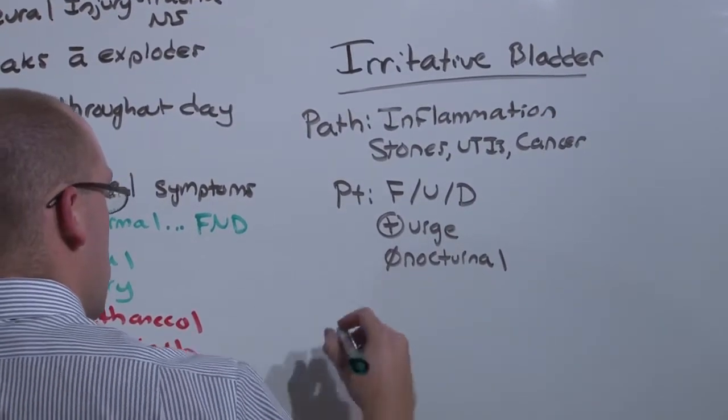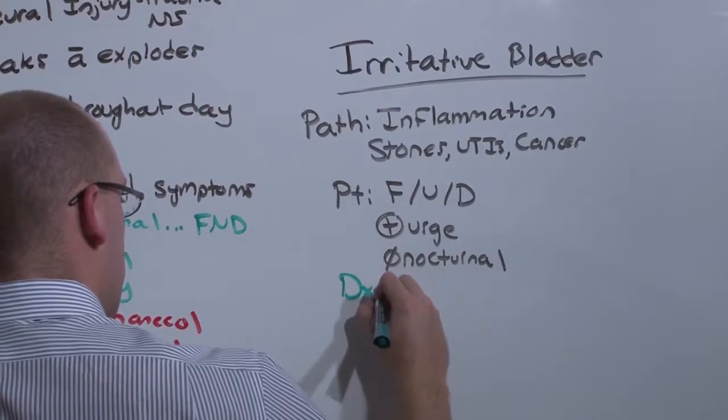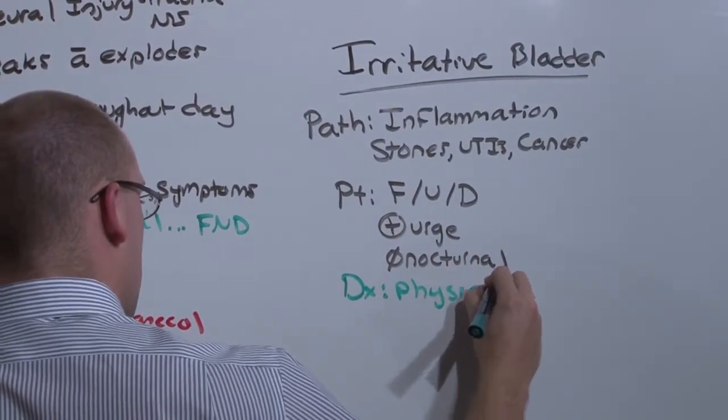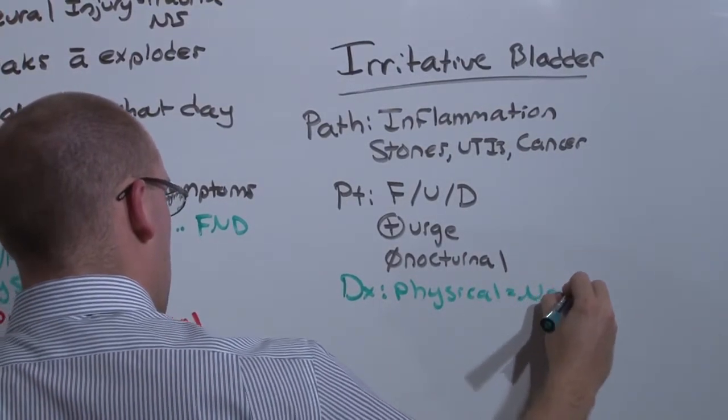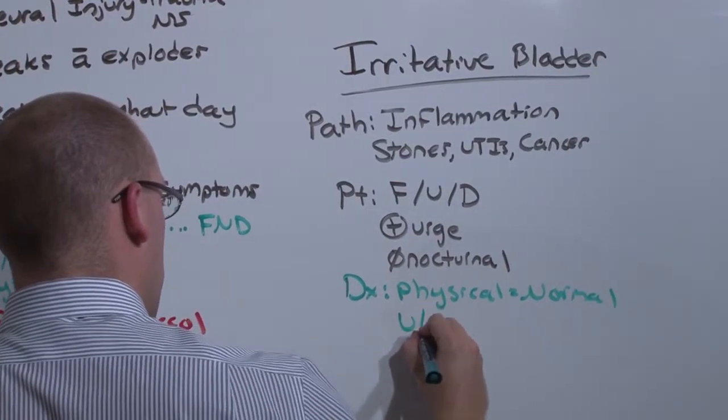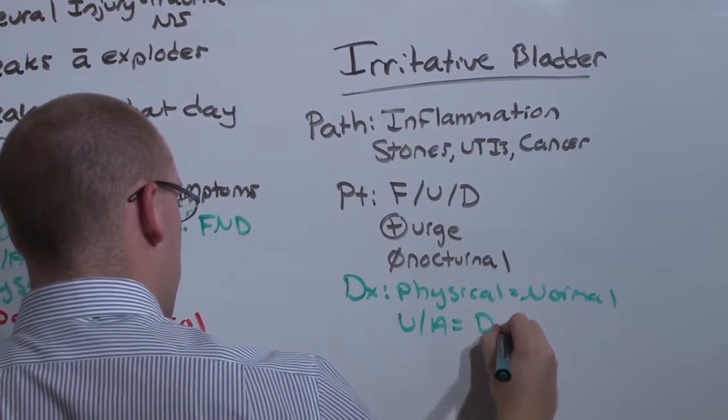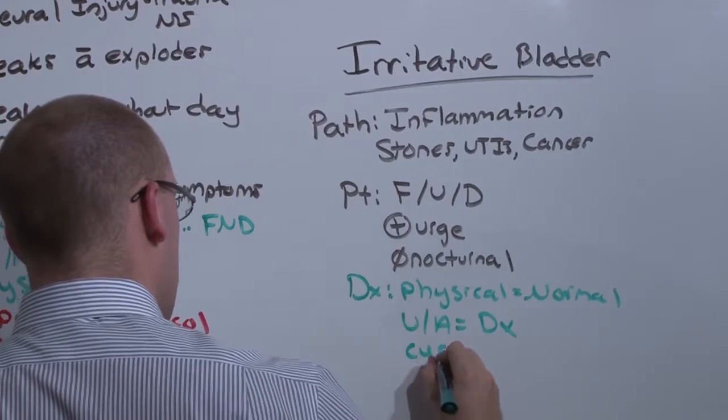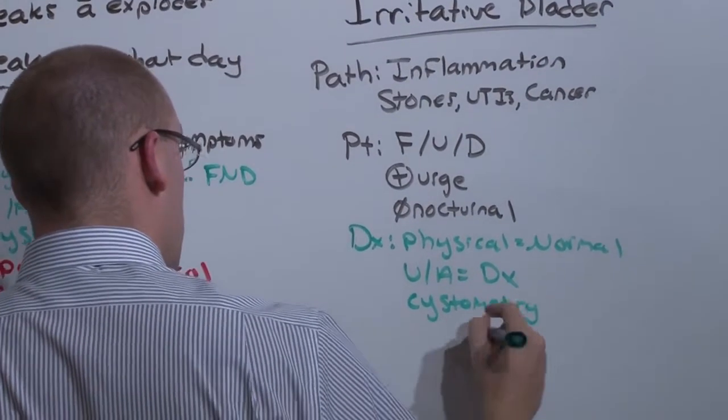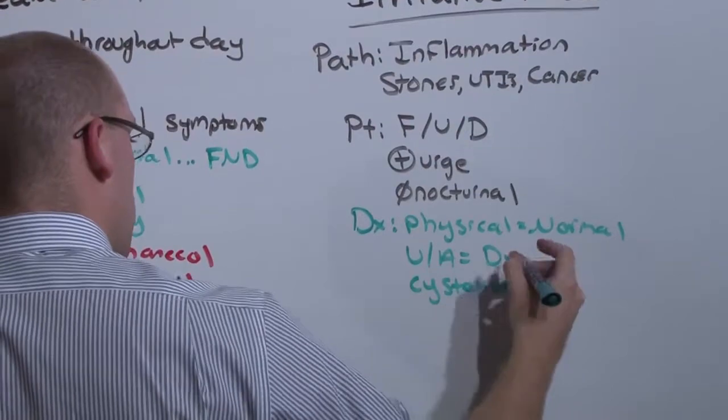The diagnosis is going to show most likely a normal physical, and the urinalysis is going to show you the diagnosis. There's no need to do cystometry. If it is due to a UTI, you'll want the urine culture.